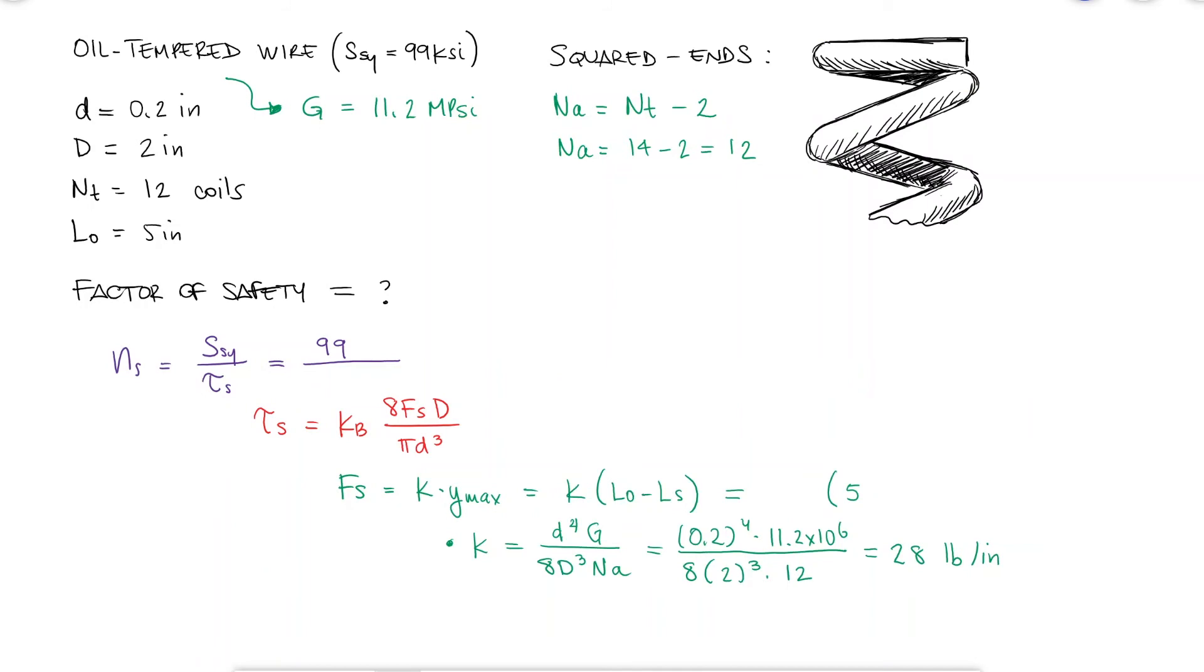The solid length will be the same that we used during example 2, since it's the same for plain ends or squared ends. With these values, we find that the force to solid length is equal to 67.2 pounds.